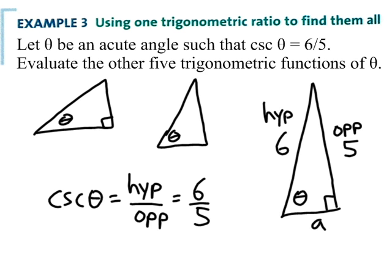In this case, if I call this A and I want to find out what A is, I would say A squared plus B squared, which is 5 squared in this case, equals C squared, which is 6 squared.